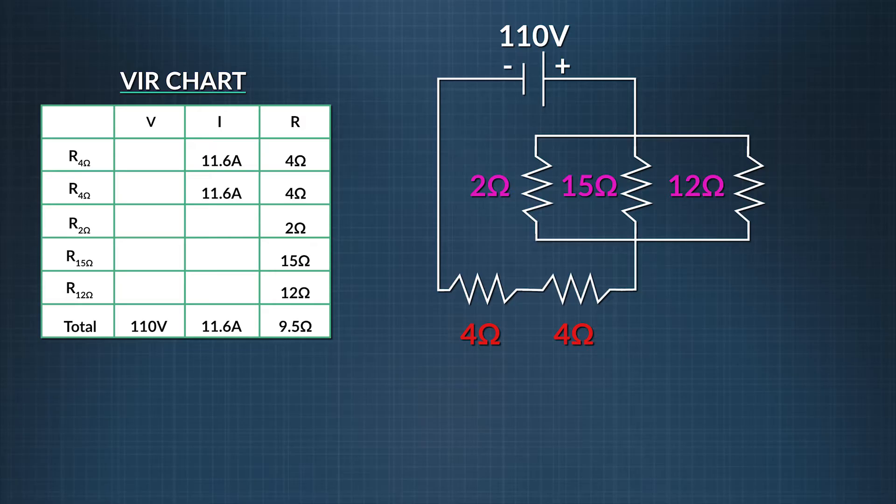We now have two out of three variables, so we can find the voltage across each of those resistors. Using Ohm's Law, we can find the voltage drop across each 4 ohm resistor. Voltage equals 11.6 amps times 4 ohms. So it comes out to 46.4 volts per 4 ohm resistor. Now, we'll put those values into our chart.